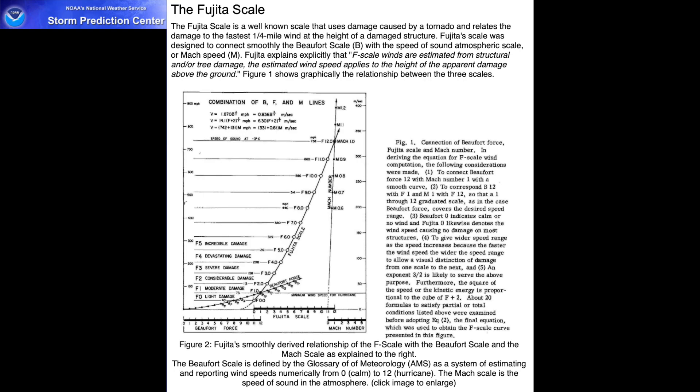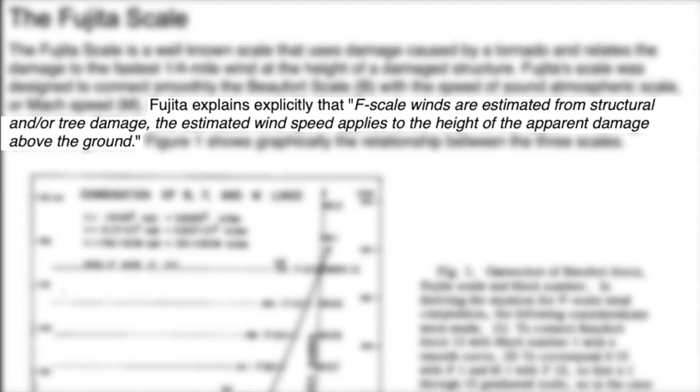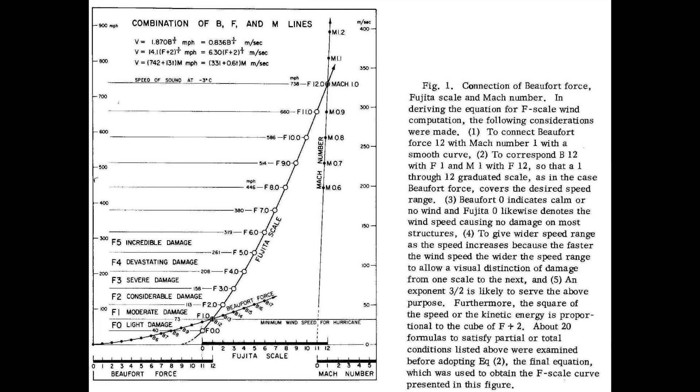What I found interesting was that Dr. Fujita's F scale was trying to smoothly associate tornadic wind speeds with the Beaufort scale and the Mach scale. The Beaufort scale was developed in 1805 by Sir Francis Beaufort of the UK Royal Navy. Dr. Fujita explains explicitly that F scale winds are estimated from structural and/or tree damage, and the estimated wind speed applies to the height of the apparent damage above the ground. We're going to pop up an image showing what the F scale, Beaufort scale, and Mach scale look like together on one graph.